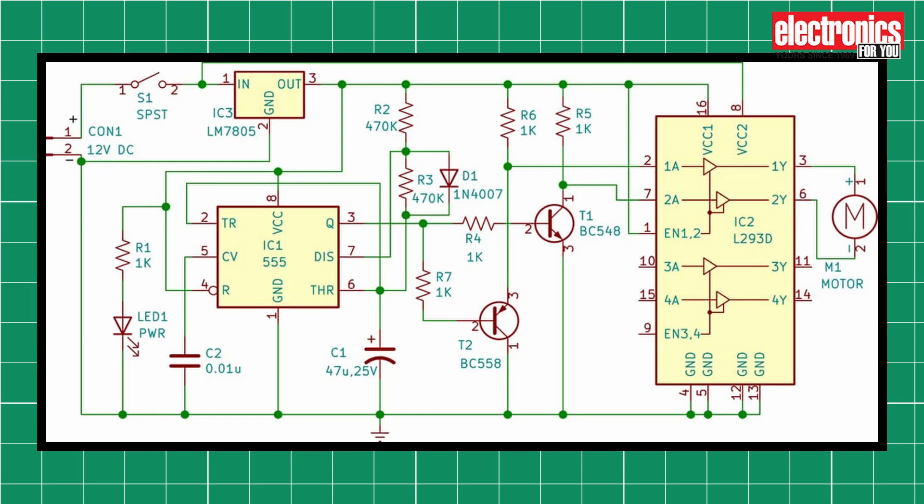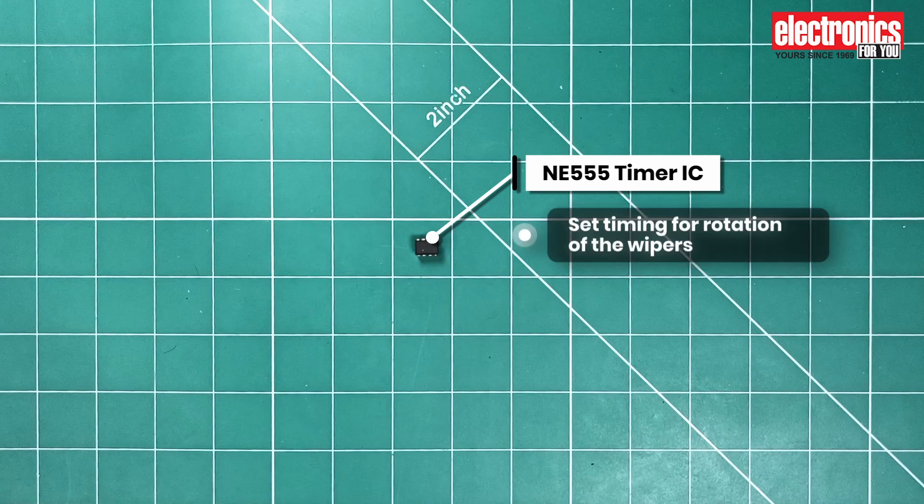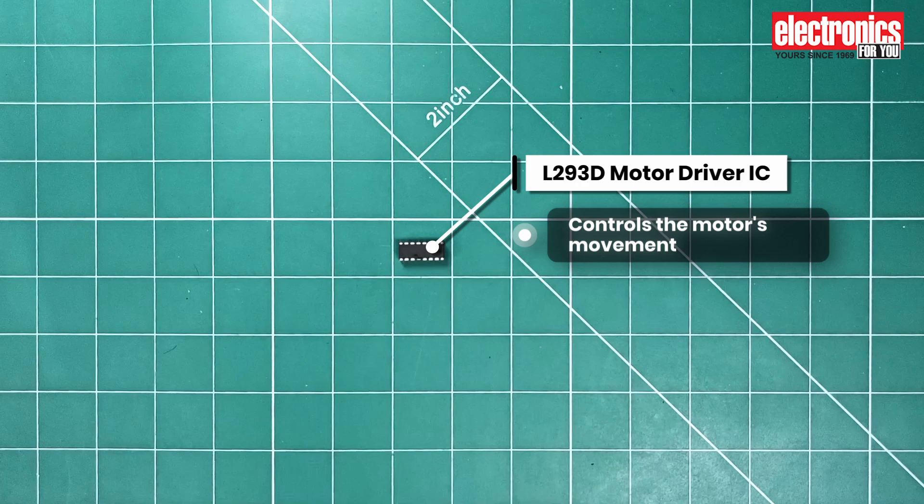In the circuit diagram, you'll notice that we use two ICs to develop this project. One is a 555 timer IC and the other is a motor driver IC. The 555 timer IC is used to set the timing for the rotation of the wipers while the motor driver IC controls the motor's movement.